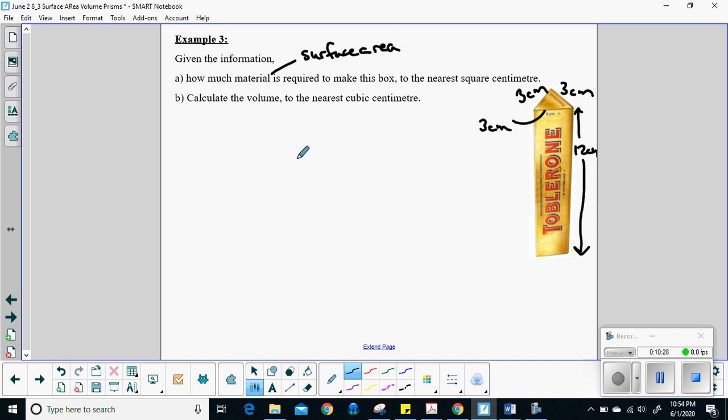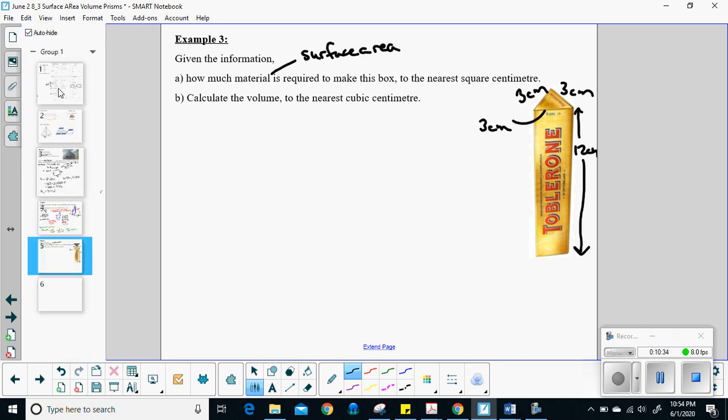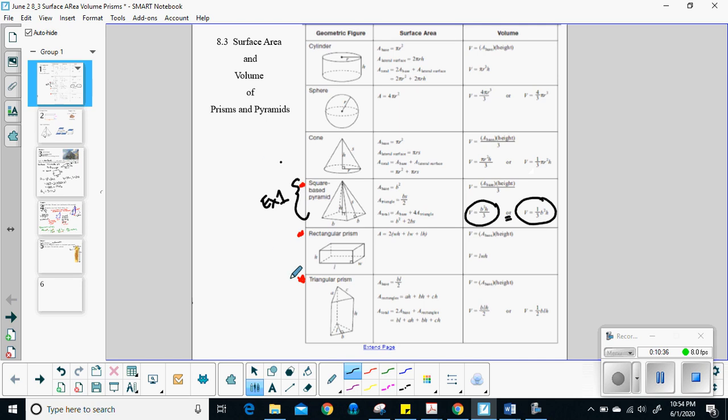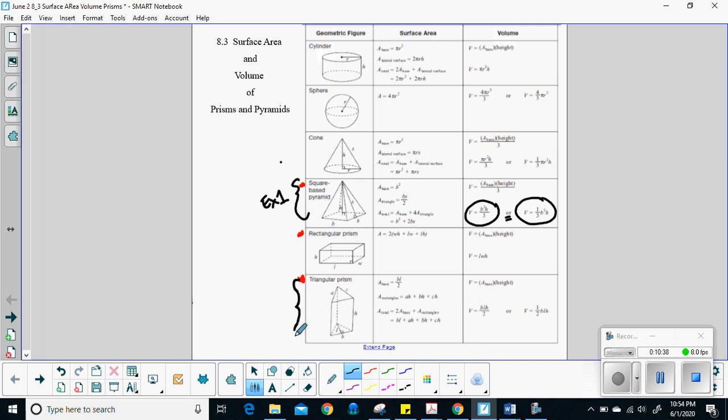And then I'm going to need to find my volume. So let's go back to our formula sheet. What am I looking at? So now I'm looking at a triangular prism. So this is example three down here.